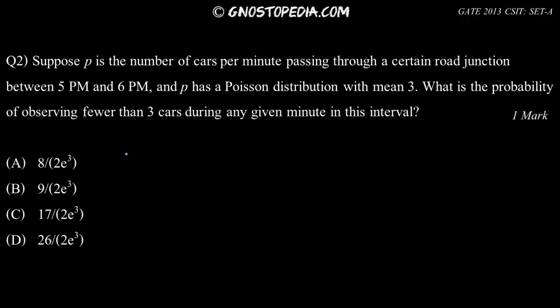Suppose p is the number of cars per minute passing through a certain road junction between 5pm and 6pm, and p has a Poisson distribution with mean 3.